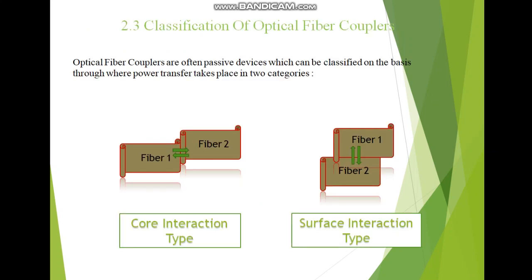Next, the classification of optical fiber couplers. We started with the introduction of optical fiber couplers, then discussed passive components and passive devices. After that, we covered active and passive couplers. The second classification of optical fiber couplers is: first, core interaction type, and second, surface interaction type. Core interaction type means the transmission from fiber 1 to fiber 2 is through the core — they are connected in series. In surface interaction type, the power is coupled through the surface from fiber 1 to fiber 2. Both couplings can be bidirectional.